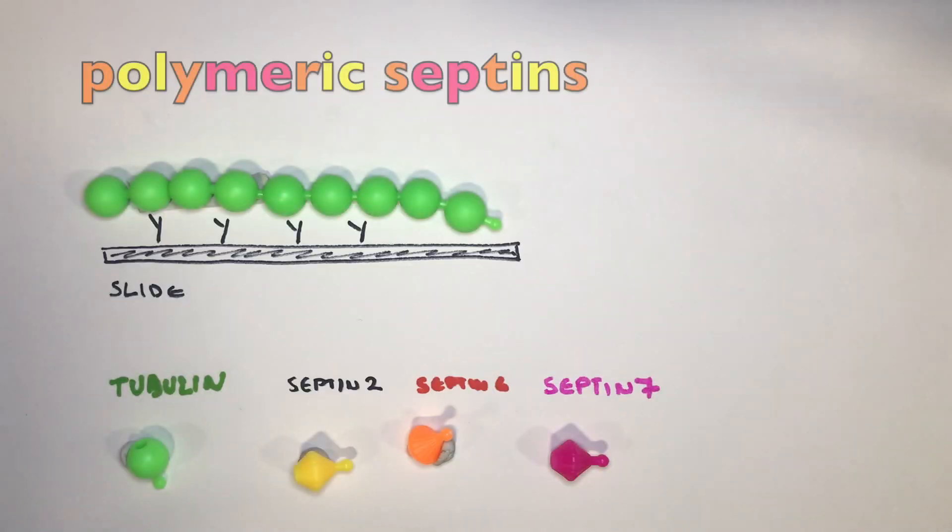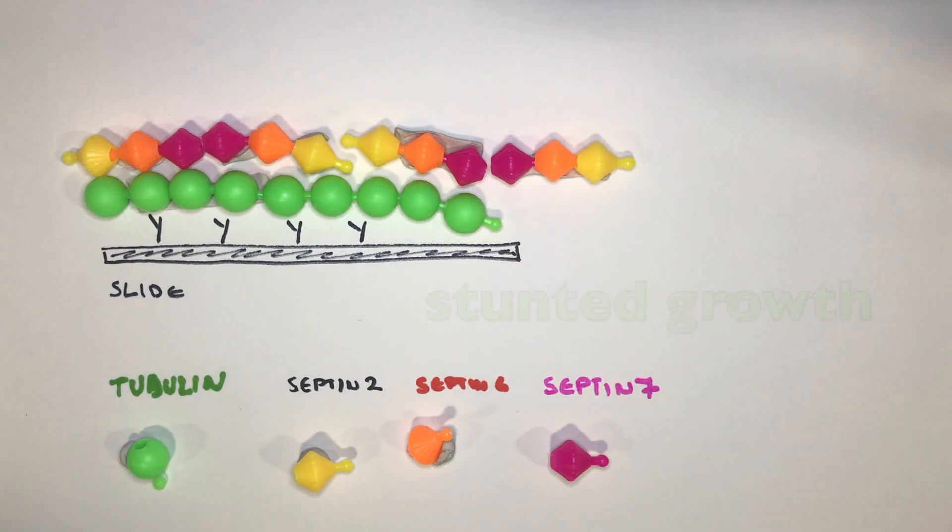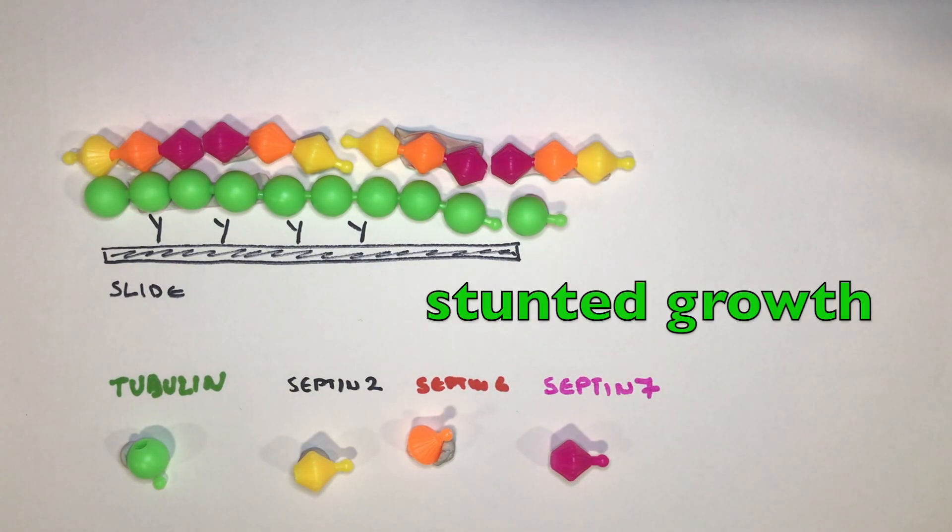While polymeric septin 2, 6 and 7 complexes resulted in stunted growth and microtubules were shorter.